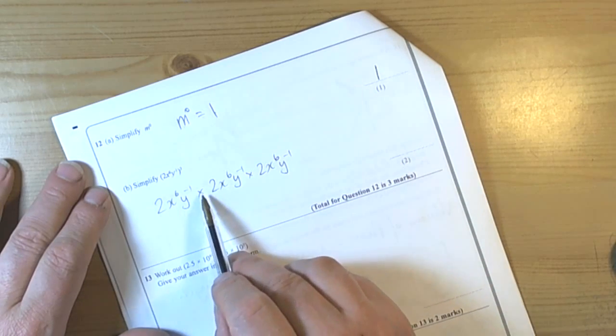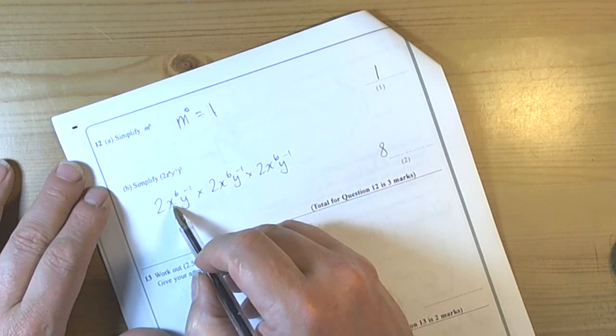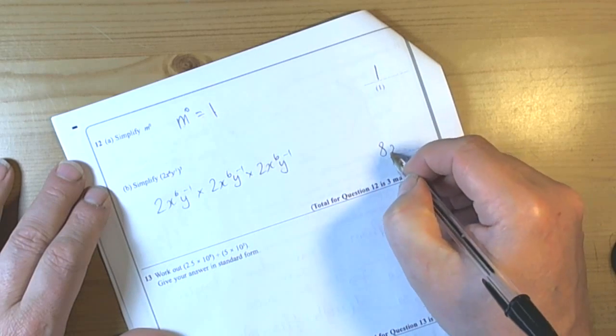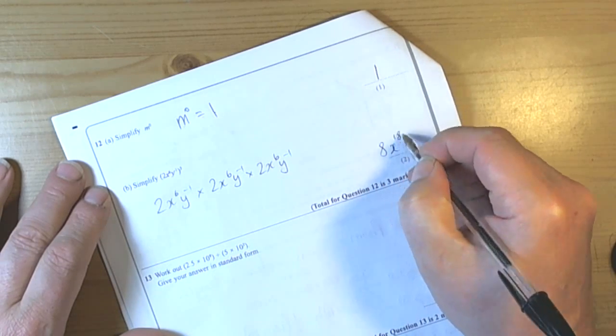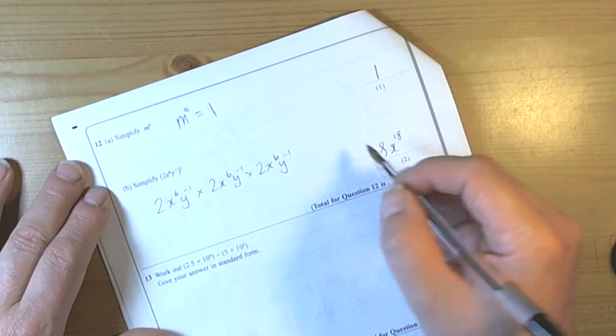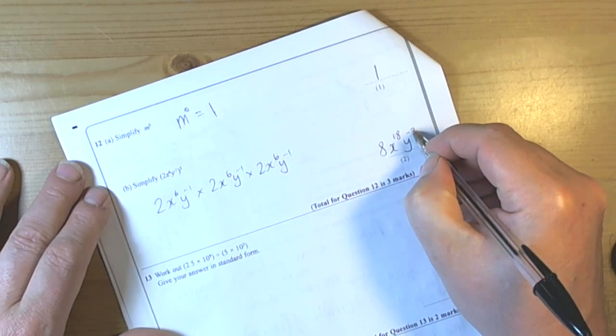So we go through, do the numbers first. 2 times 2 times 2 is 8. Do the powers of x next. We've got power 6, power 6, and power 6. The rule says we add those powers, so that's power 18. And again, for the y's we're multiplying, so it tells us that we add the powers, which negative 1 plus negative 1 plus negative 1 is negative 3.